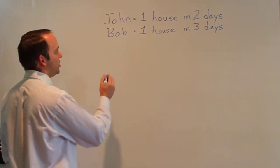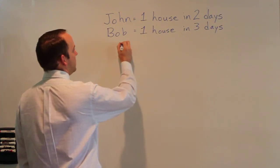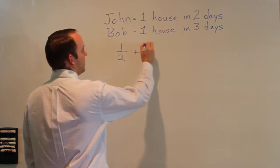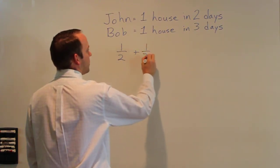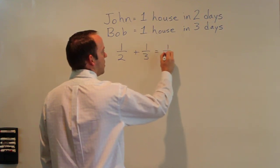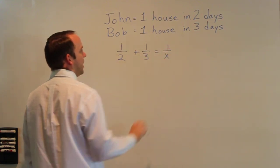You need to set up an equation. John can paint one house in two days plus Bob can paint one house in three days and we want to know how long if they work together would it take them to paint one house?